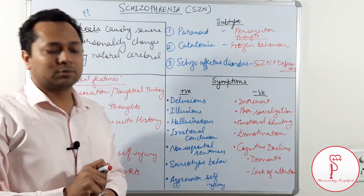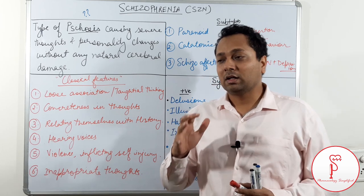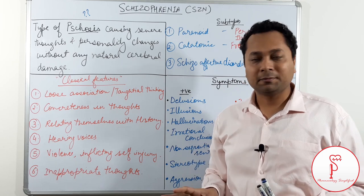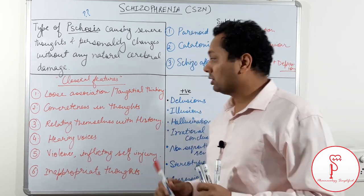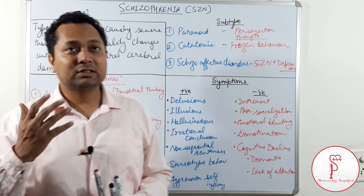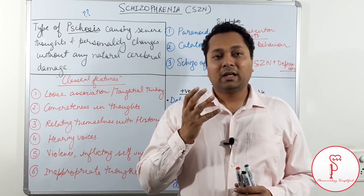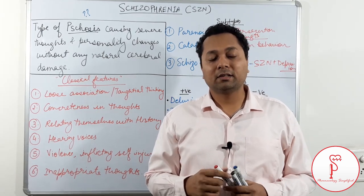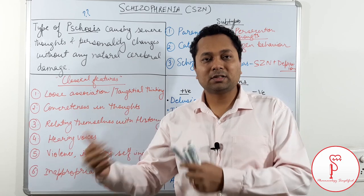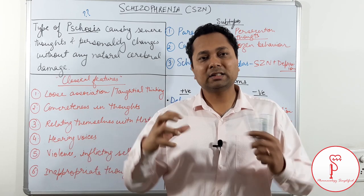If we look at the behavioral symptoms of a schizophrenic patient, they are very important to study. The behavior of a schizophrenic patient is always going to be inappropriate. The first classical feature is loose association or tangential thinking. For example, if I ask you how was your day, you will tell me your activities in a sequential way — you got up at 6 a.m., went to college at 8 a.m. — and that will make sense.